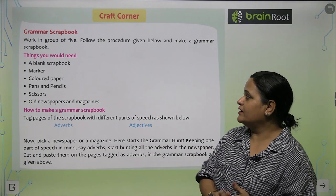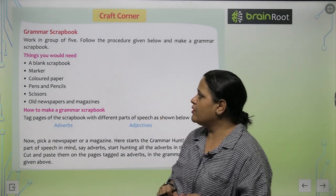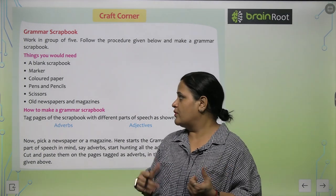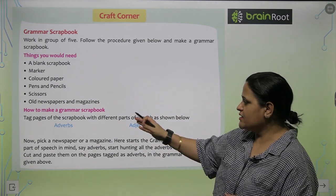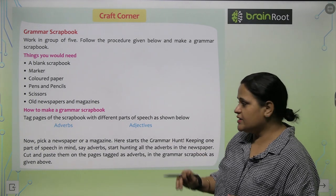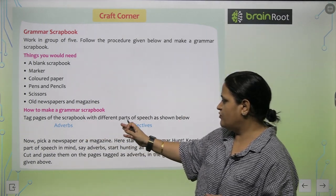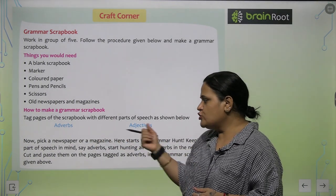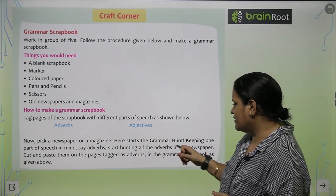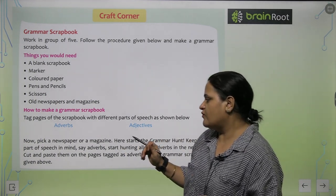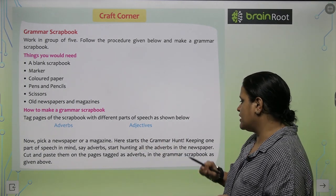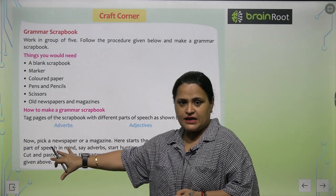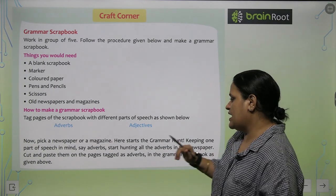Now we have a craft corner. You have to make a grammar scrapbook. Work in groups of five. Follow the procedure given below and make a grammar scrapbook. Tag pages of the scrapbook with different parts of speech — for example, adverbs and adjectives. Pick a newspaper or a magazine and start the grammar hunt. Keeping one part of speech in mind — say, adverbs — hunt all the adverbs in the newspaper. Cut and paste them on the pages tagged as adverbs in your grammar scrapbook.